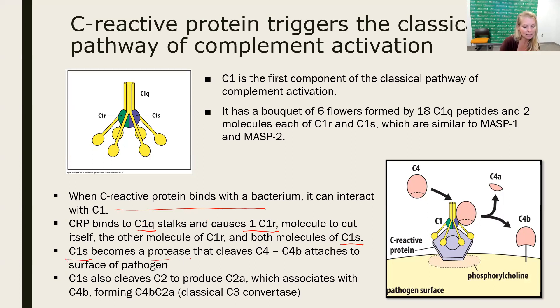C4A and C4B will be created. C4B is going to attach to the surface of the pathogen and C4A is going to go away. C1S also cleaves C2. Then C2 will form into C2A and C2B. C2A will stay and C2B will go bye-bye. That's going to create then the C3 convertase of the classical pathway, which is C4B2A, just like what we saw previously.